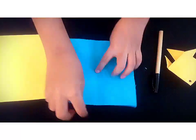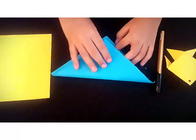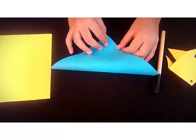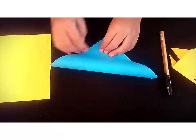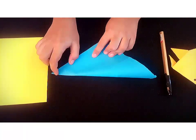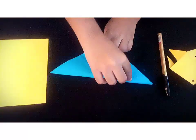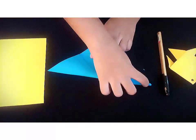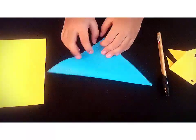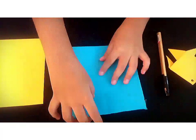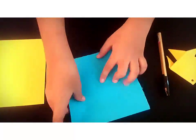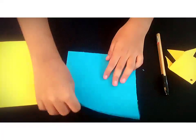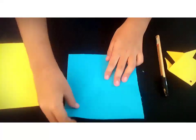Now we will make it into a triangle again and now we will do it into a square form and from this middle line over here we will make like this crease.